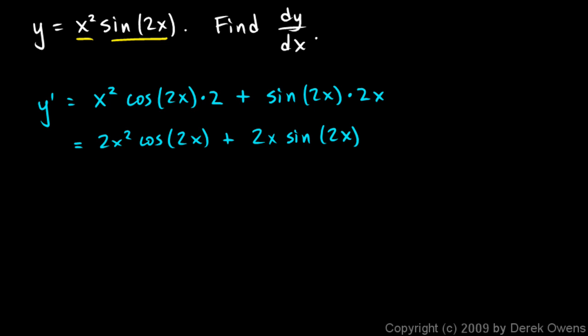And I can factor a 2x out from each term. And 1x will be left behind in the first term. So this becomes 2x times x cosine 2x plus sine 2x. Like that.